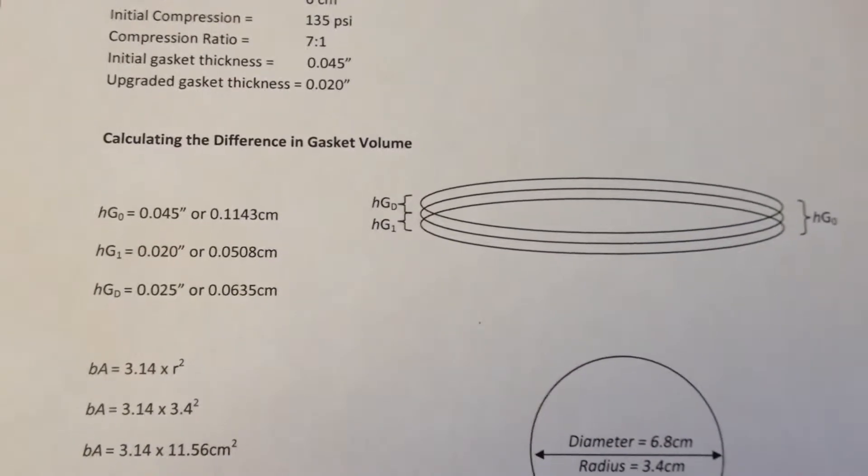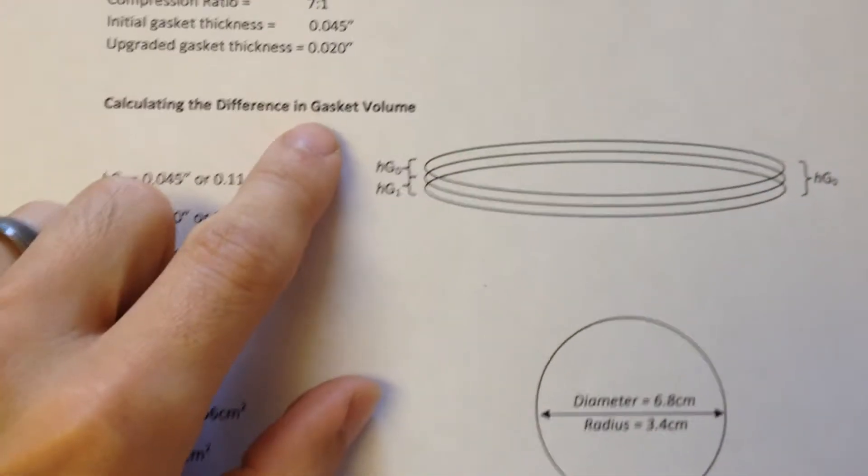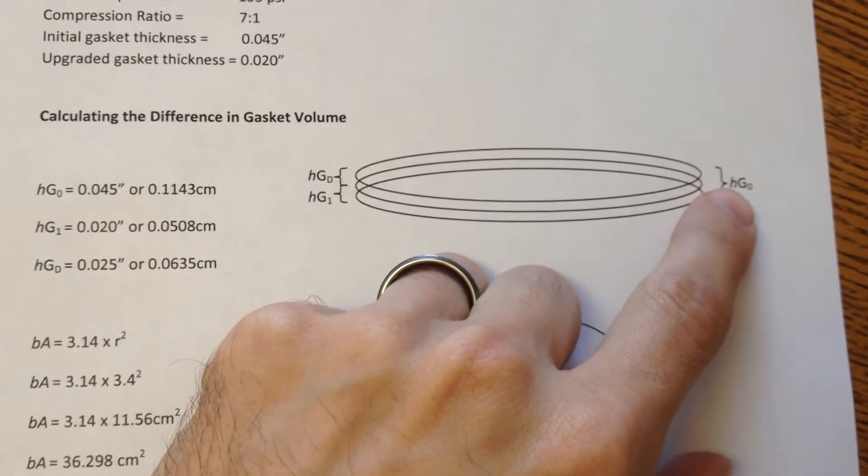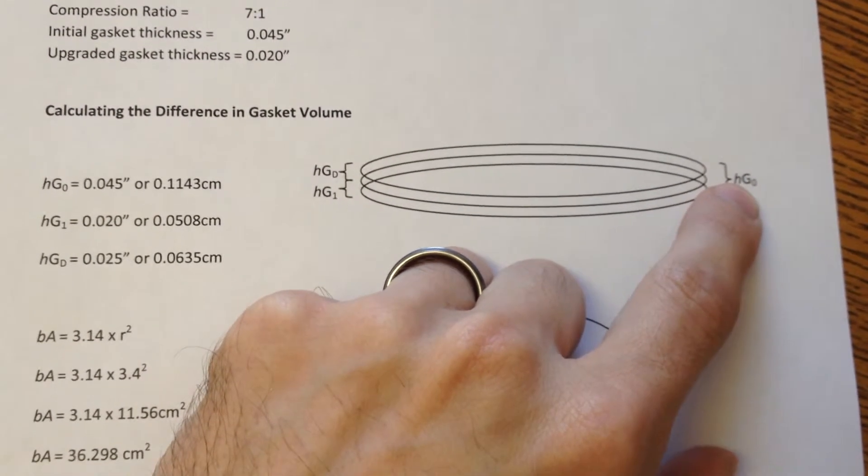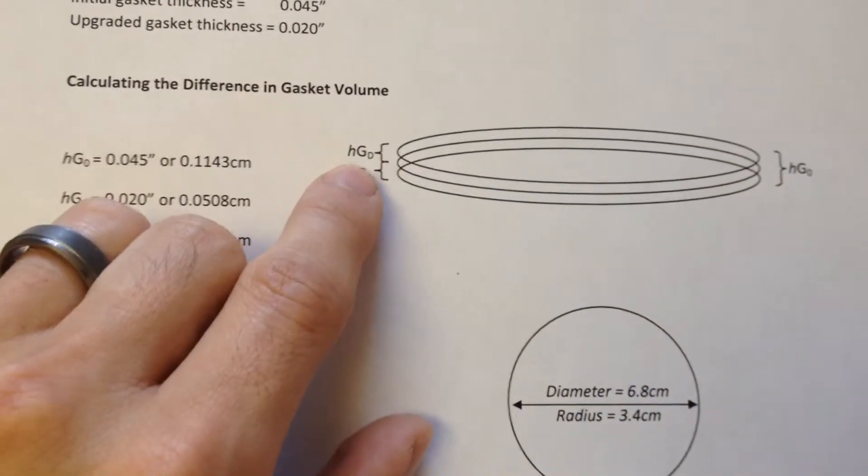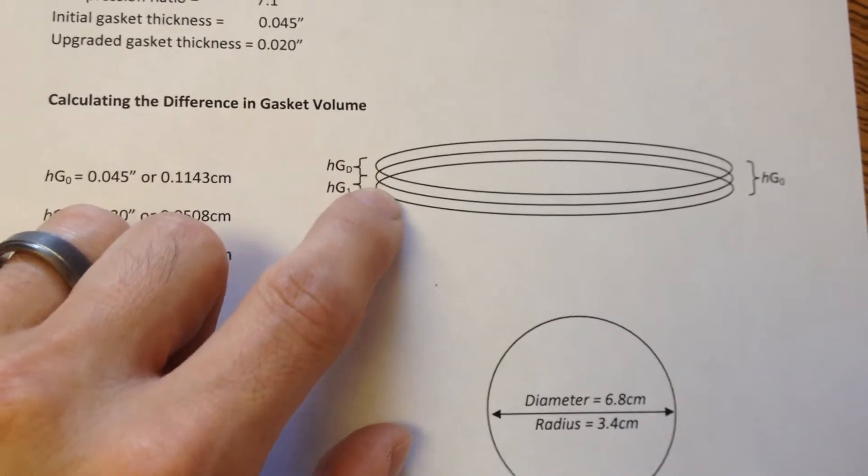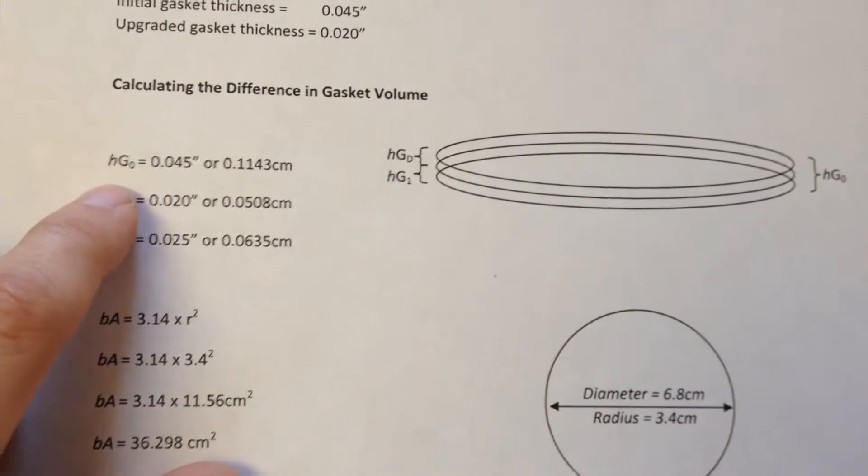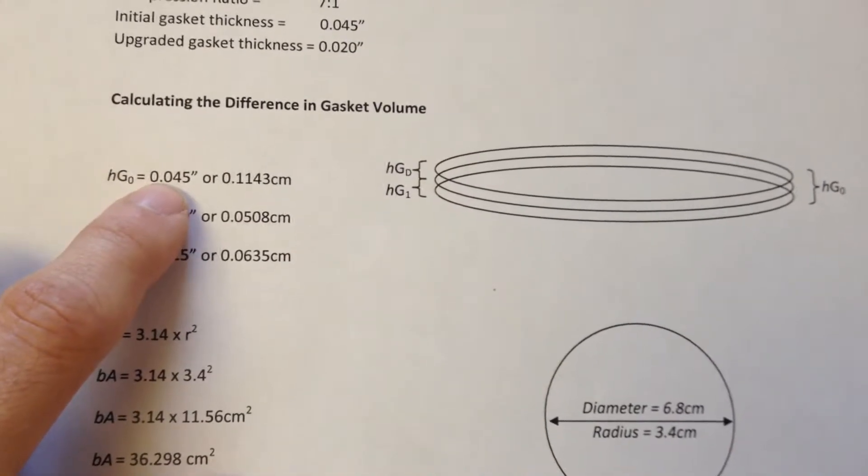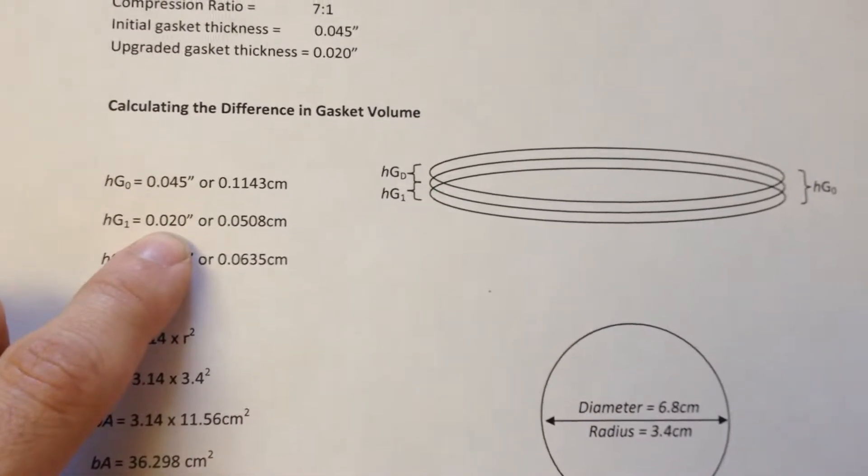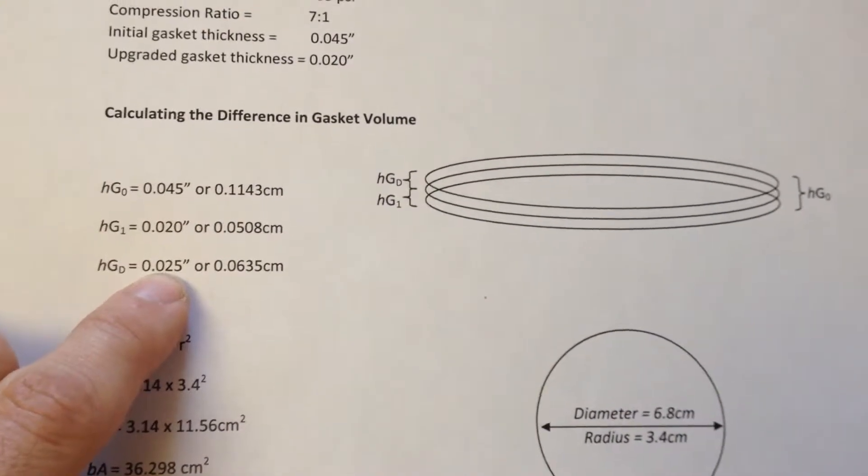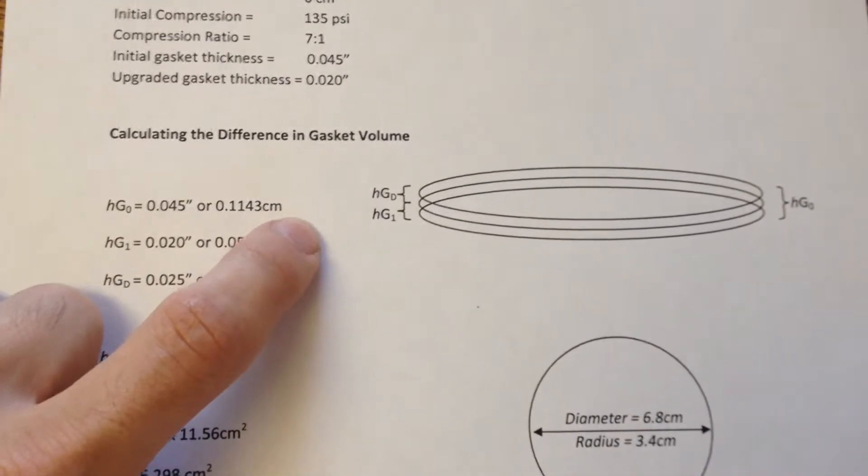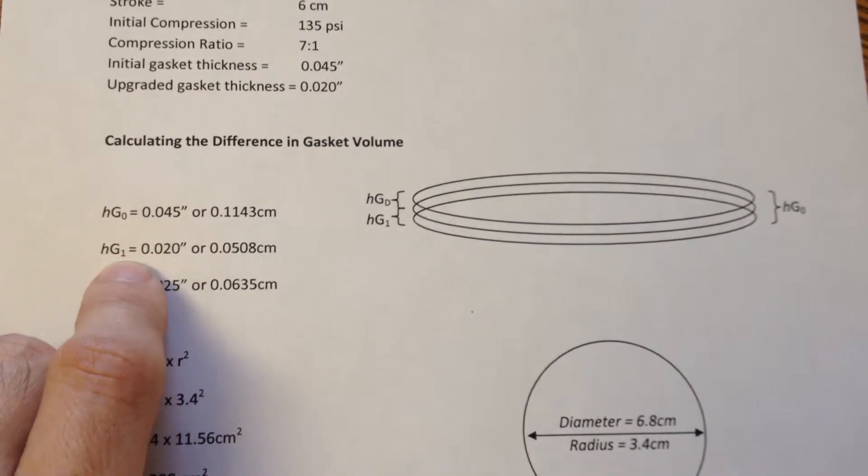So first we'll be calculating the difference in the gasket volume. Initially we'll be starting with the initial gasket here that I've denoted as height of gasket 0. This would be the height of gasket 1, which is our new gasket, and then HGD is the height of gasket difference. That's just a quick and easy calculation. My initial gasket was 0.05 inches. My new gasket is 0.02 inches. And the difference between those two is 0.025. So don't get caught up in all the HG1, HDGD, HD0. It's just the way that I'm signifying what it is so I can keep track of it in my mind.